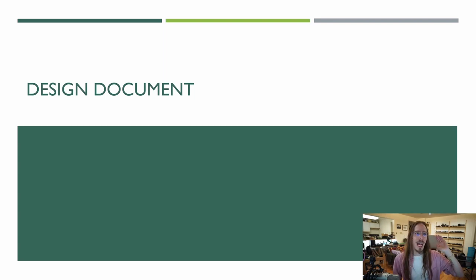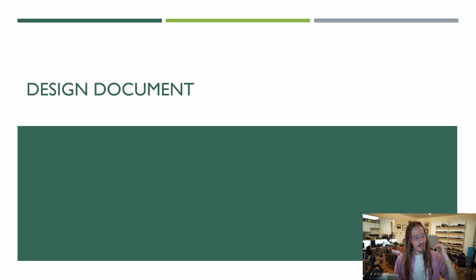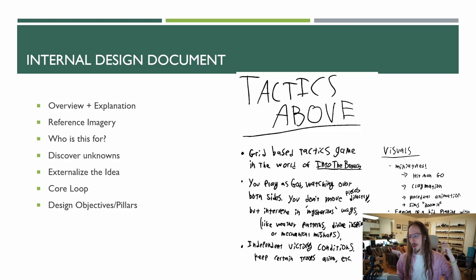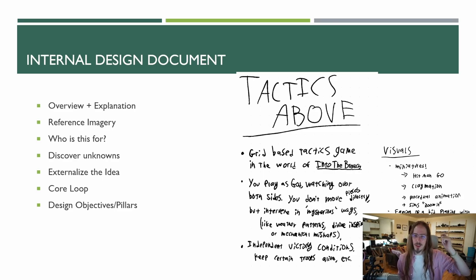Get that admin stuff out of the way, but write it down. Next is the design document — an actual design document, an overview of your game. It's going to include reference imagery and a pitch. It's going to answer the questions: what is this game doing? Who is my audience? How do they play?